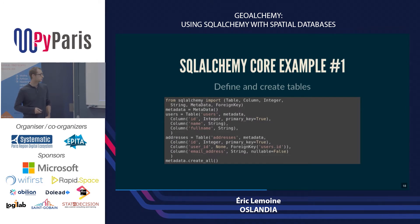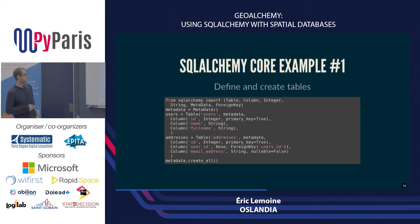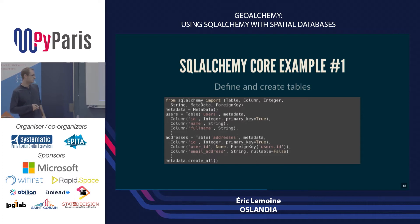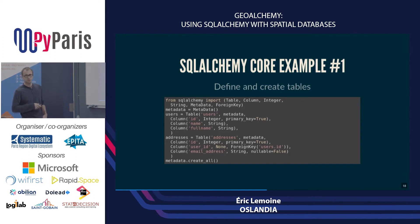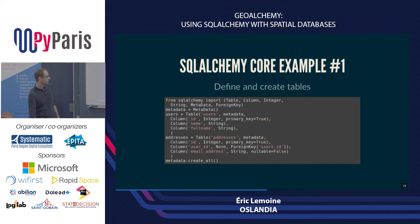A few examples of how to use SQLAlchemy. Example number one: how to define and create tables. Here I create two tables — a users table with columns ID, name, and full name, same as before — and an addresses table with an ID, a user ID column which is a foreign key to the users table, and an email address column. You do your definition like this in Python, and then you call create_all, which will issue the SQL queries for creating those tables in your database.